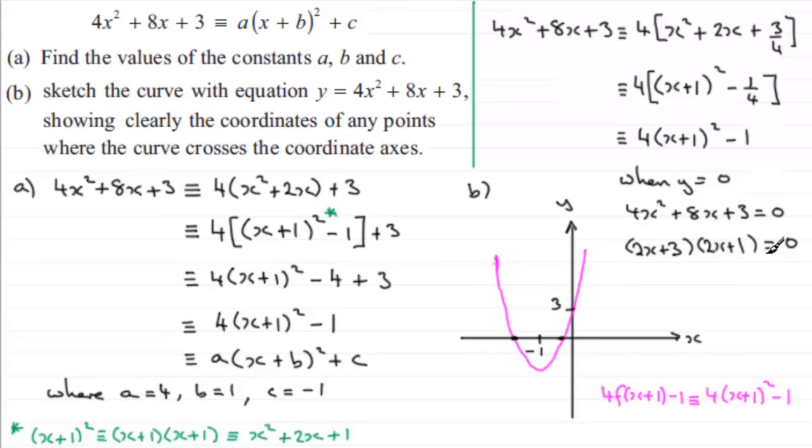We put each of these two factors equal to 0, so we'd therefore have 2x + 3 = 0 or 2x + 1 = 0. And then I take 3 from both sides and then divide by 2. So therefore, x would equal minus 3 over 2. Or, in this case, if I subtract 1 from both sides, 2x would equal minus 1, divide by 2 and we'd end up with x equaling minus a half.